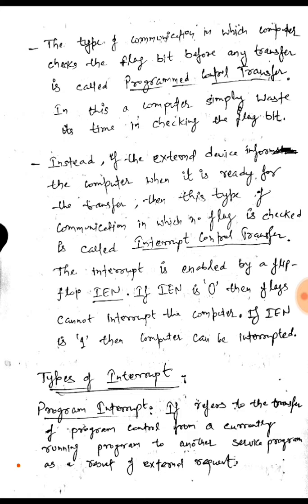Input-output devices use interrupts to communicate with the CPU. The interrupt is enabled by a flip-flop called IEN. If IEN is 0, flags cannot interrupt the computer; if IEN is 1, the computer can be interrupted.